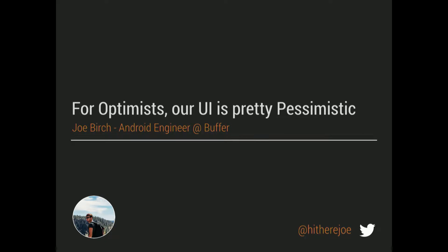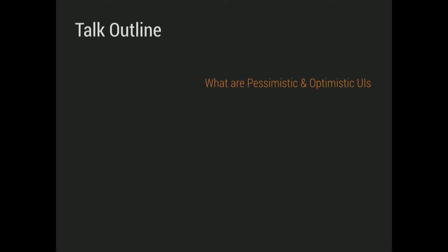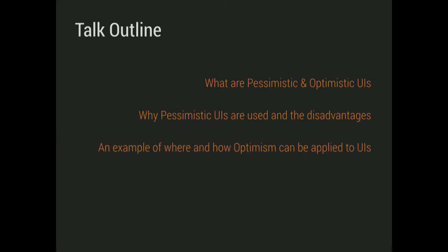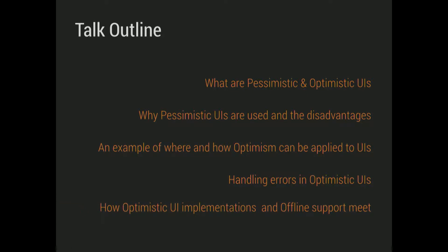Just to lay some foundations of what we're going to be looking at: we're going to begin by looking at what pessimistic and optimistic UIs are and how pessimism and optimism applies to user interfaces in our applications. Then we're going to look at why people use pessimistic UIs and the disadvantages this can bring to the user experience. Then we'll look at an example or two of simple places in our applications where optimism can be applied to increase the experience. Then we're going to look at how we can handle errors in optimistic UIs gracefully. And if we have time, we'll look at the link between optimistic design and offline support, because the two kind of meet somewhere.